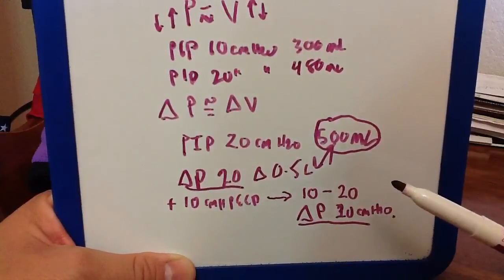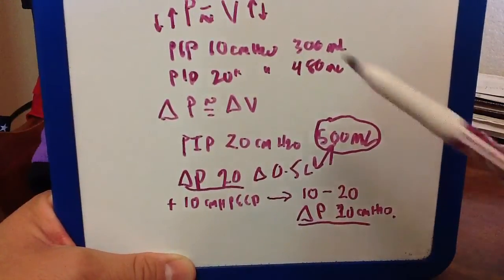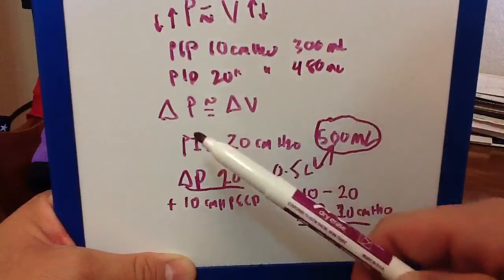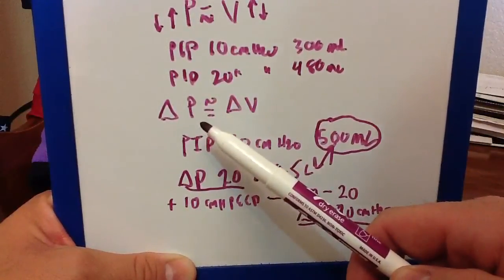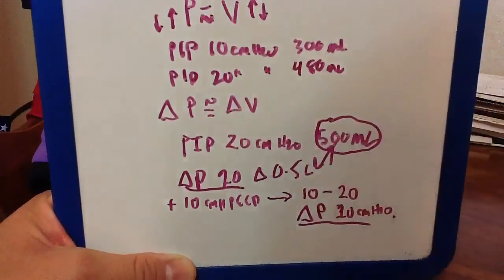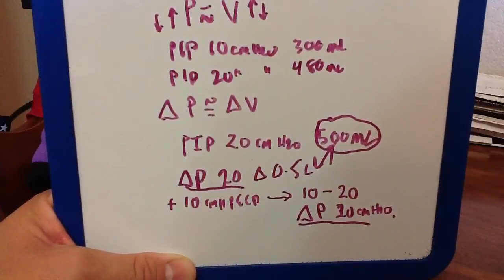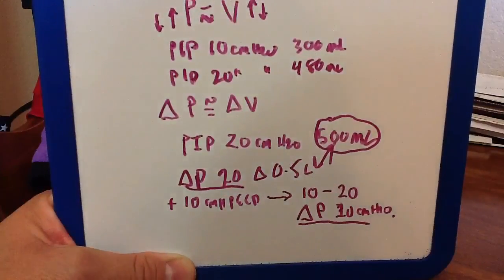So hopefully that makes sense that it is not pressure per se. It is delta P. It is the change in pressure that leads to a change in volume. Hopefully you found that helpful. And as always, thanks for hanging in there.